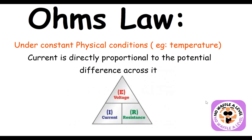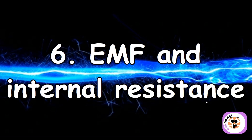Now let's look at Ohm's Law. There are two parts to the definition: first, it assumes constant physical conditions such as temperature. Second, the main statement is that current is directly proportional to the potential difference across a conductor. So Ohm's Law is fundamentally about the relationship between current and voltage.